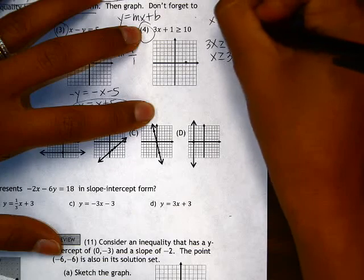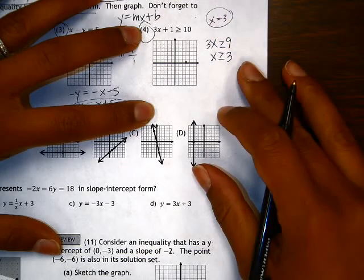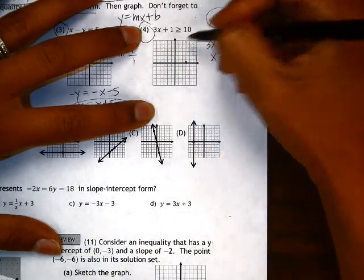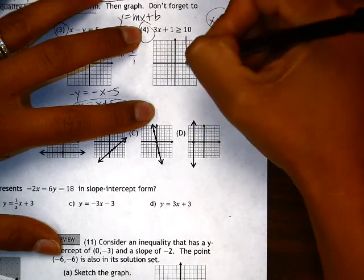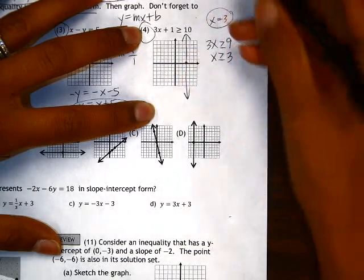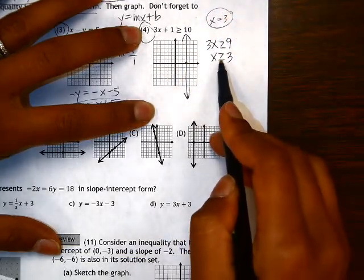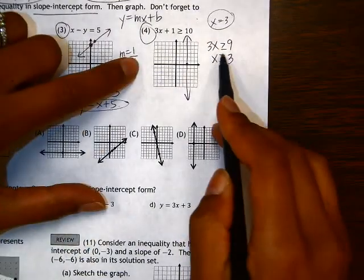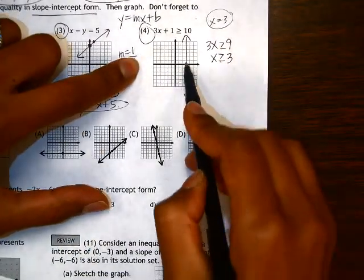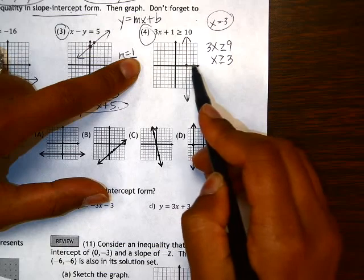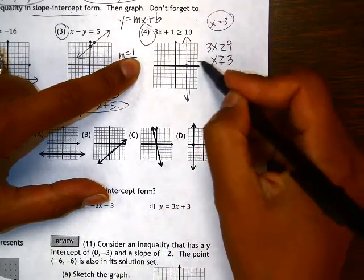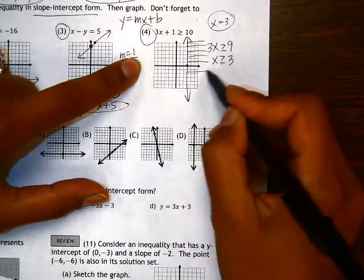So if we're at x equals 3, the equation x equals 3 is a vertical line through 3. And I'm going to use a solid line here, because it's greater than or equal to. And we need to shade, so if it's greater than 3, x is greater than 3 if you go to the right, not to the left. So I'm going to shade to the right of this line.